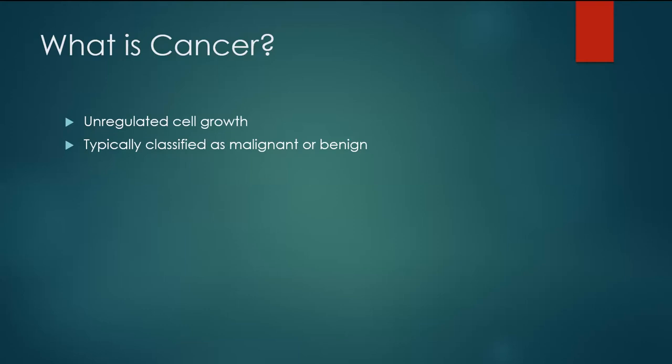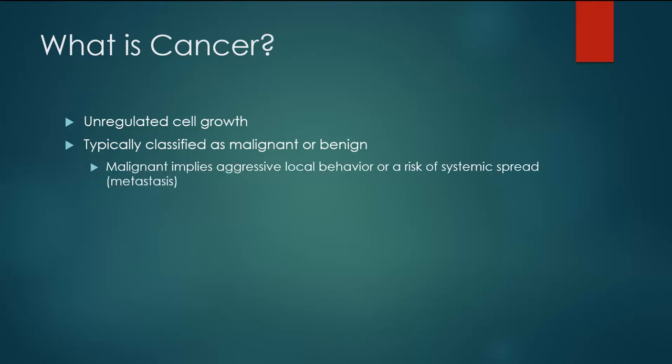But really, when we think about tumors, that's kind of the first question we want to answer: are we dealing with a malignant tumor or are we dealing with a benign tumor? So the word malignant implies that a tumor has either an aggressive local behavior and/or an aggressive systemic behavior. And that process of systemic spread is called metastasis, which means that the tumor gains access to either the bloodstream or the lymphatics and is able to spread throughout the body.